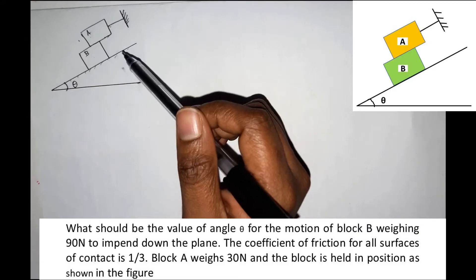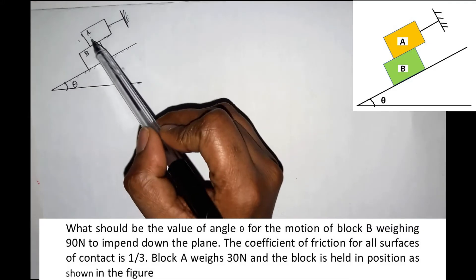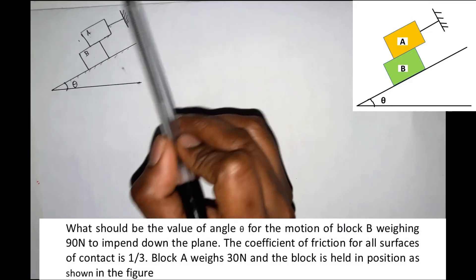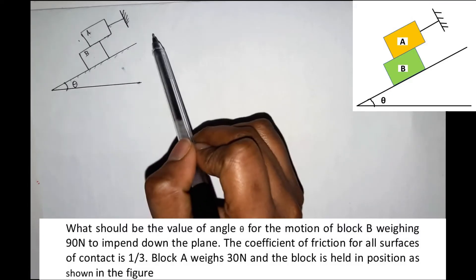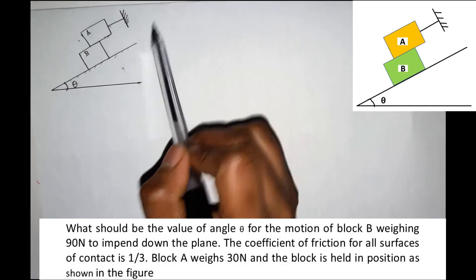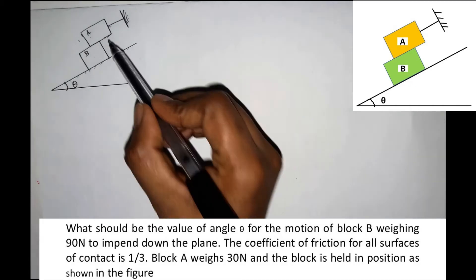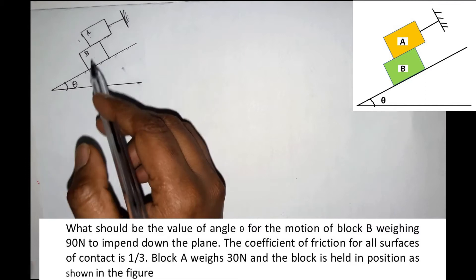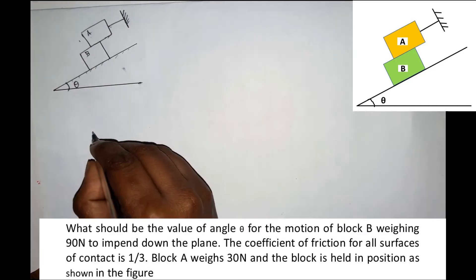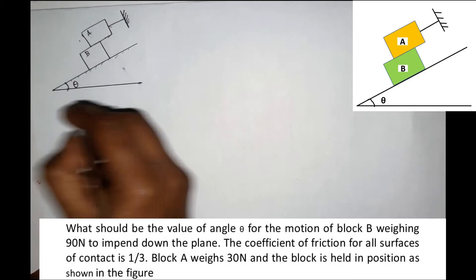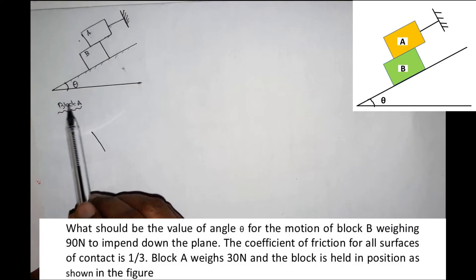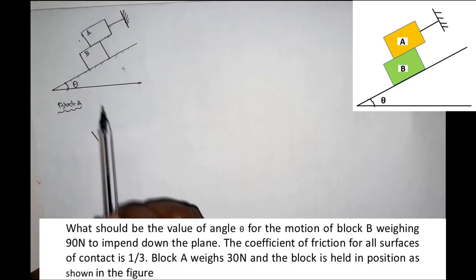Now we have three body diagrams: block A in the free body diagram, and block B in the free body diagram. First, we consider the free body diagram of block A on the inclined plane.